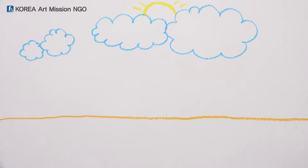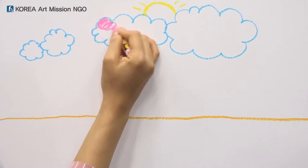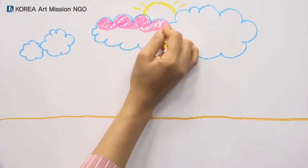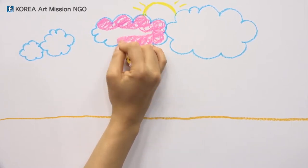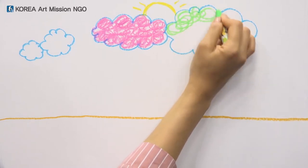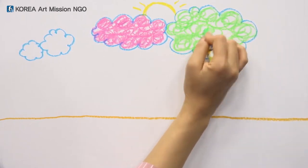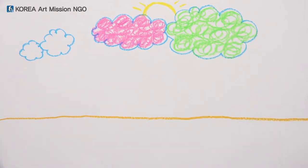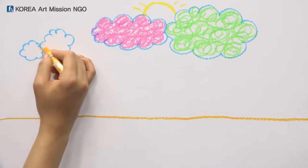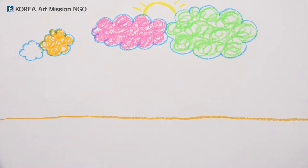I want to color the clouds with different colors this time. Mom cloud is pink. If you fill it in with round lines, it really looks like a cloud. And I will color dad cloud with light green. Round, round — fill in the clouds. And last, younger brother is yellow. Oh, it is so cute.